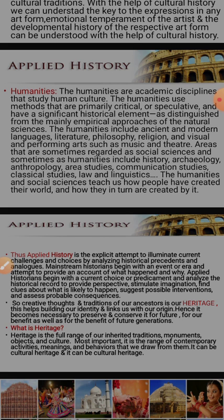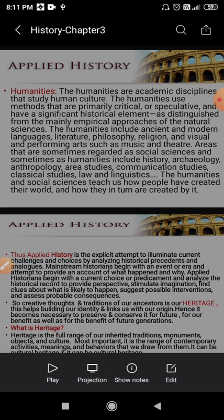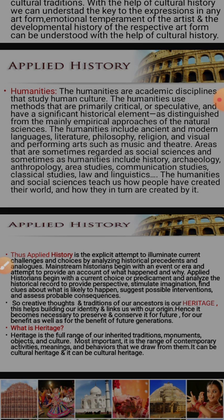Areas sometimes regarded as social sciences and sometimes as humanities include history, archaeology, anthropology, area studies, communication studies, classical studies, law, and linguistics. The humanities and social sciences teach us how people have created their world and how they are in turn created by it. History is the study of the past; archaeology deals with digging and studying past remains; sociology is the study of society; anthropology studies human society and behavior; political science studies politics; and economics studies the economy. All these subjects are part of humanities, and we can understand them only with the help of history.